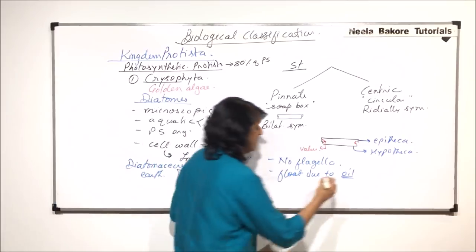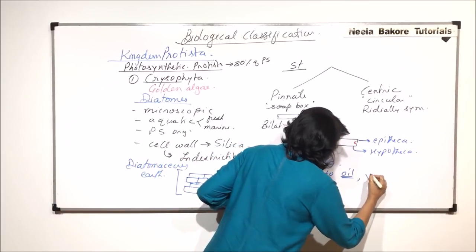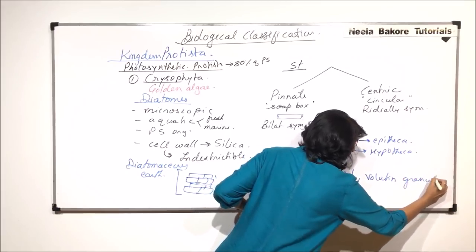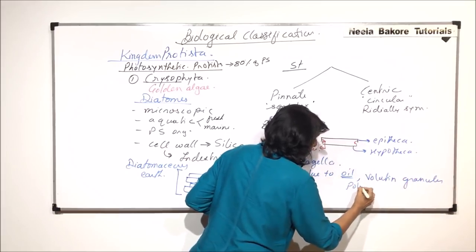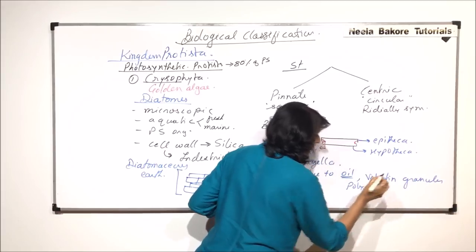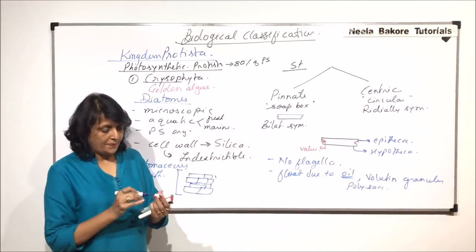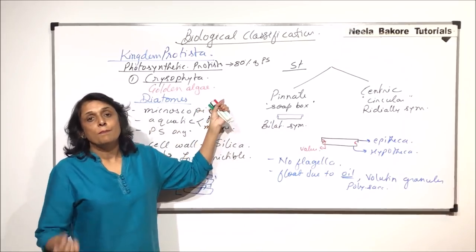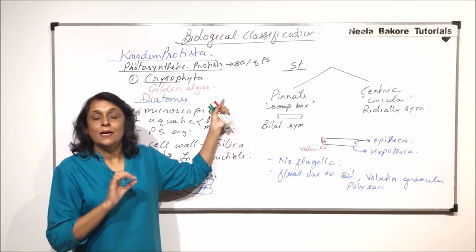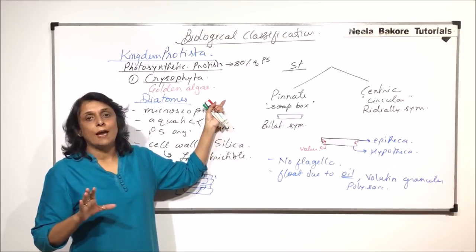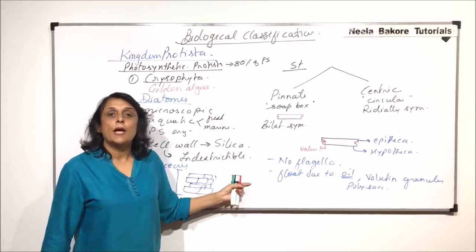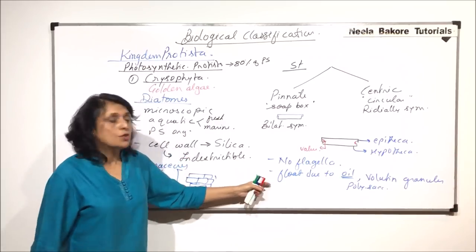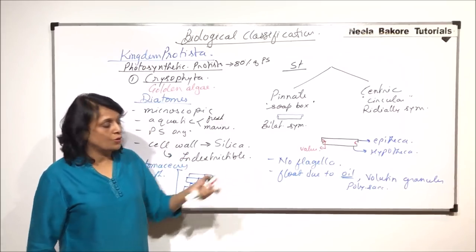They have oil droplets, volutin granules, and they also have polysaccharide as the reserve material. Cytoplasmic content is simple because it is a protist. Protista includes all unicellular eukaryotic organisms. Eukaryotic means it would have all typical eukaryotic structures.